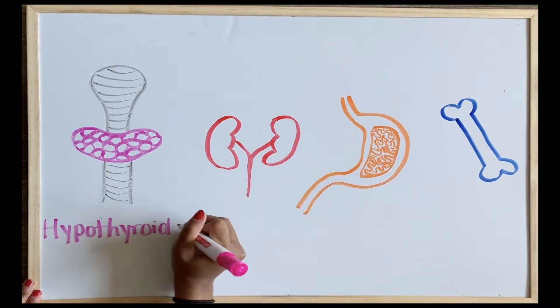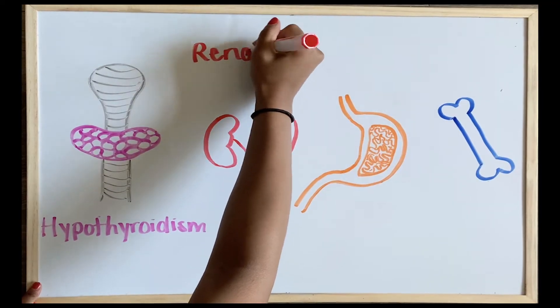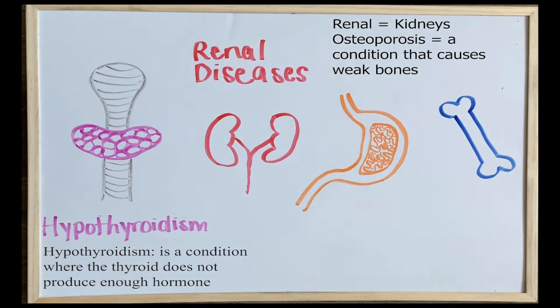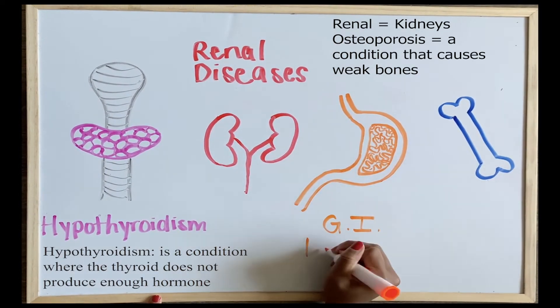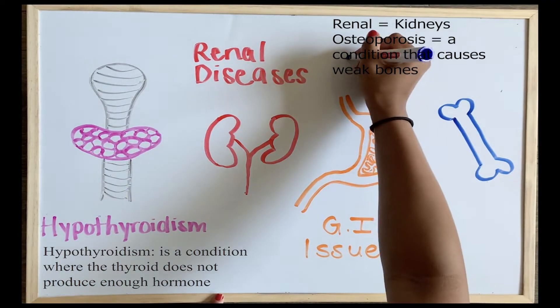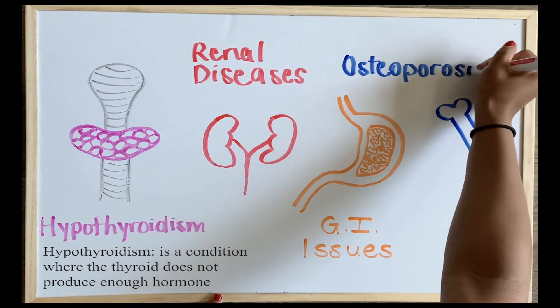People with Turner syndrome are also increasingly susceptible to a range of disorders, including hypothyroidism, renal diseases, gastrointestinal issues, and osteoporosis.